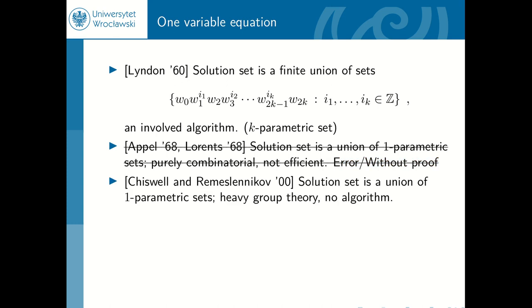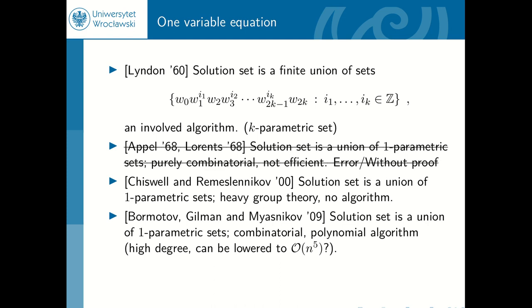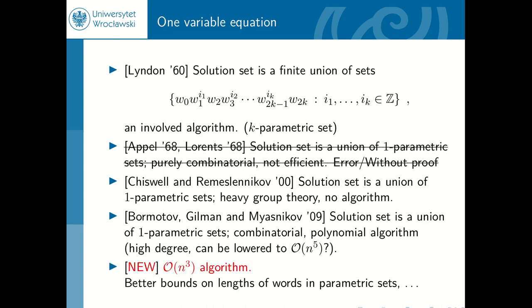This result was also shown using an approach which used heavy group theory. In particular, there was no algorithm and we do not even know whether there is one, since the tools used were really not constructive. The state of the art for this problem is a paper by Bermotov, Gilman, and Mieznikov, who showed exactly the same result using a purely combinatorial approach. They also gave an algorithm with polynomial running time, although they didn't analyze the exact degree of the polynomial — there were some high upper bounds, probably lowerable to something like n to the 5. In this paper, we give a cubic time algorithm and also better bounds on the words w which occur in those parametric sets.